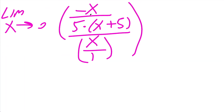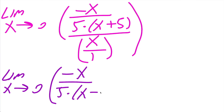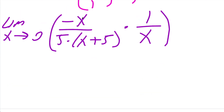We have two fractions, so we can rewrite: negative x divided by five times x plus five, times one divided by x. We notice the x in the numerator and the x in the denominator cancel out.